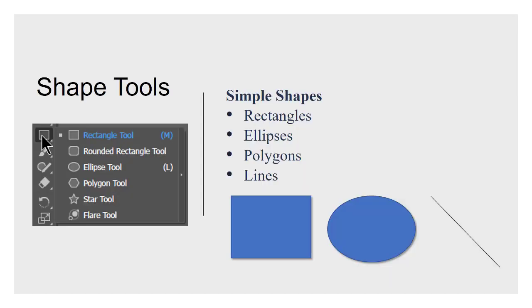There are some simple shape tools in Illustrator: the rectangle, rounded rectangle, ellipse, polygon. More complex, you can do the star tool and even more so the flare tool. But still, these are fairly simple geometric shapes that you can use. Circles and squares and lines—that's kind of what it all comes down to in Illustrator.